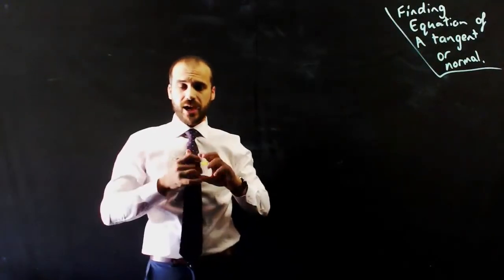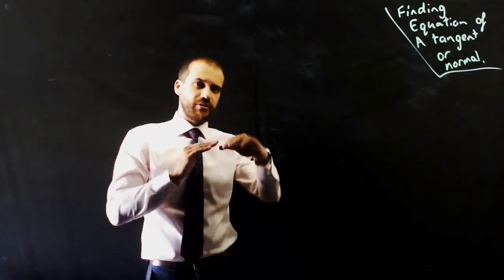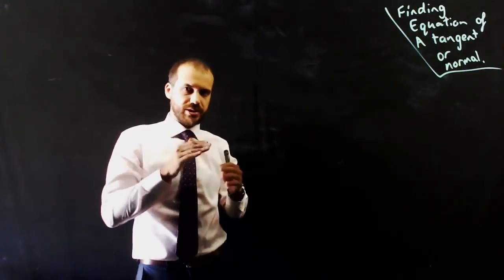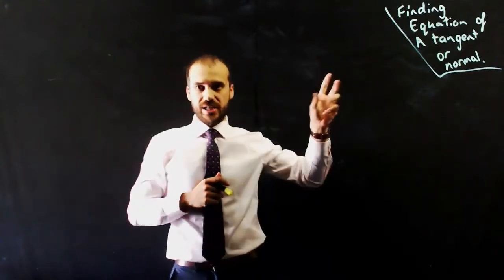So let's assume you've been given a function and you want to find a line that just touches the function but doesn't pass through it. It's just touching it. That's finding the equation of a tangent.